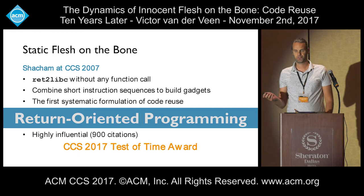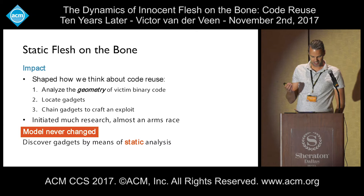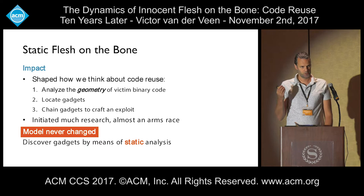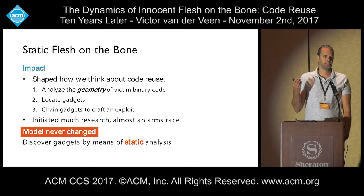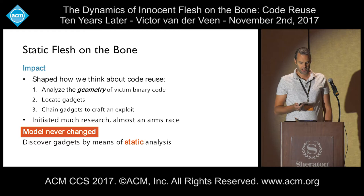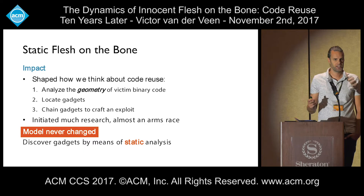The impact of this work is that still today this paper shaped how we think about code reuse attacks. We're analyzing the so-called geometry of a binary to locate gadgets and then chain these to craft an exploit. The work initiated a lot of research, with both attackers and defenders developing onwards from this original return-oriented programming, and almost an arms race started. However, during this race, the model never changed — we're still discovering gadgets by using static analysis.